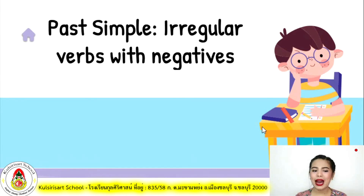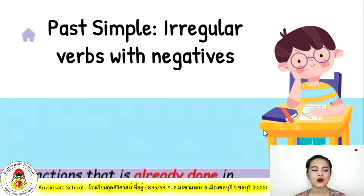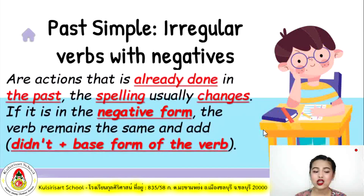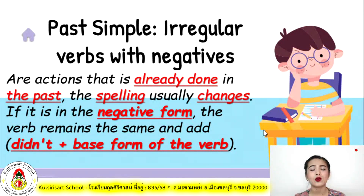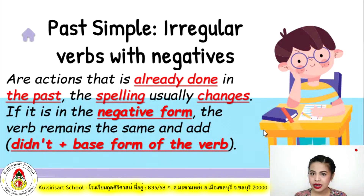Now we're going to learn about past simple irregular verbs with negatives. Past simple describes actions already done in the past — the spelling usually changes. If it is in a negative form, the verb remains the same; just add 'didn't' plus the base form of the verb. For example, the past simple of 'run' is 'ran.' If that becomes negative, it becomes 'didn't run.'